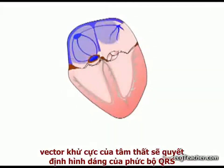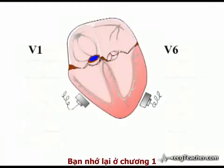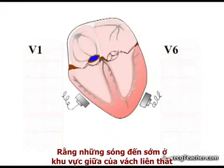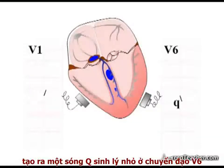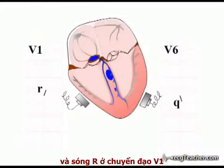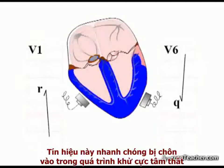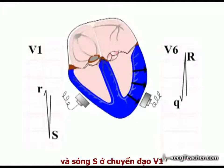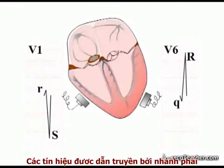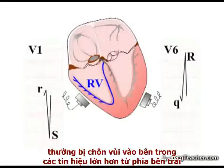Analysing the major ventricular depolarisation vectors dictating the QRS complex morphology, the early flow of depolarisation in the mid-zone of the intraventricular septum from an intact left bundle branch produces a small physiological Q wave in lead V6 and R wave in lead V1. This signal is rapidly overwhelmed by the onset of left ventricular depolarisation which, moving towards V6, produces a strong R wave in this lead and S wave in lead V1. Signal transmitted by the right bundle branch depolarises the right ventricle, but the signal from right ventricular depolarisation is usually buried in that generated from the larger left-sided chamber.